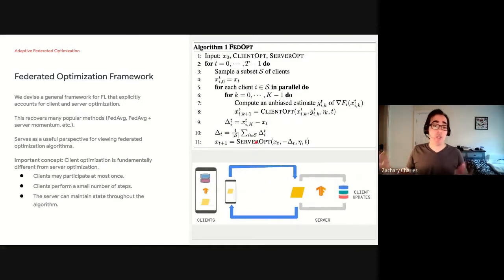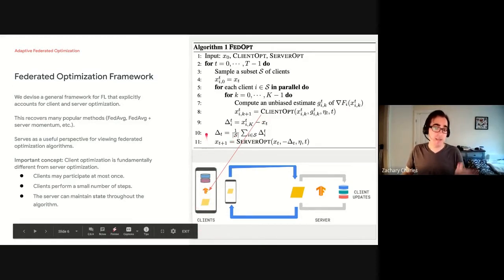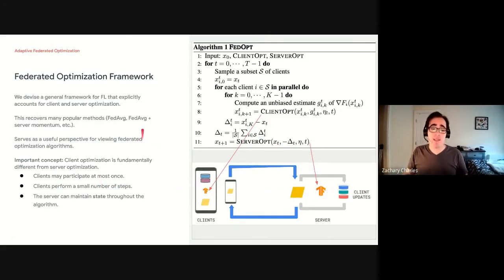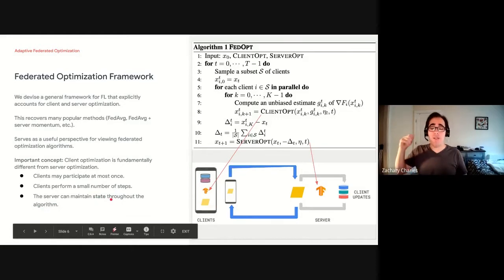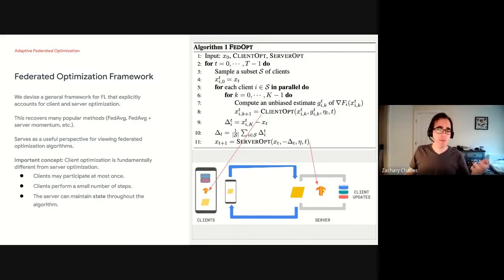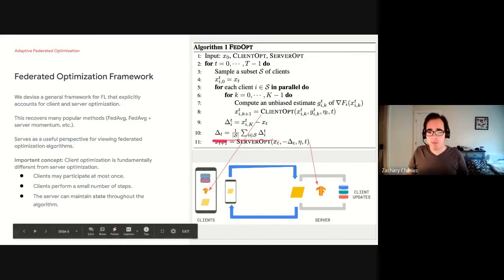And so we just devised a general framework for federated optimization that explicitly accounts for client-server optimization. And it recovers a lot of really popular methods such as federated averaging. We call this FedOpt. And you should really think of this as a collection of algorithms. And what's really important is that FedOpt incorporates a client optimizer that happens on the clients, obviously, and a server optimizer. And what's really important about this is that client optimization is fundamentally different from server optimization. In a lot of settings, clients only participate at most once because there's so many clients. Clients generally only perform a small number of steps, whereas the server is present throughout and can hold on to things in memory. So it can preserve state throughout the algorithm. And this makes the choice of client optimizer and server optimizer very different. The server optimizer might be better suited for very sophisticated algorithms.